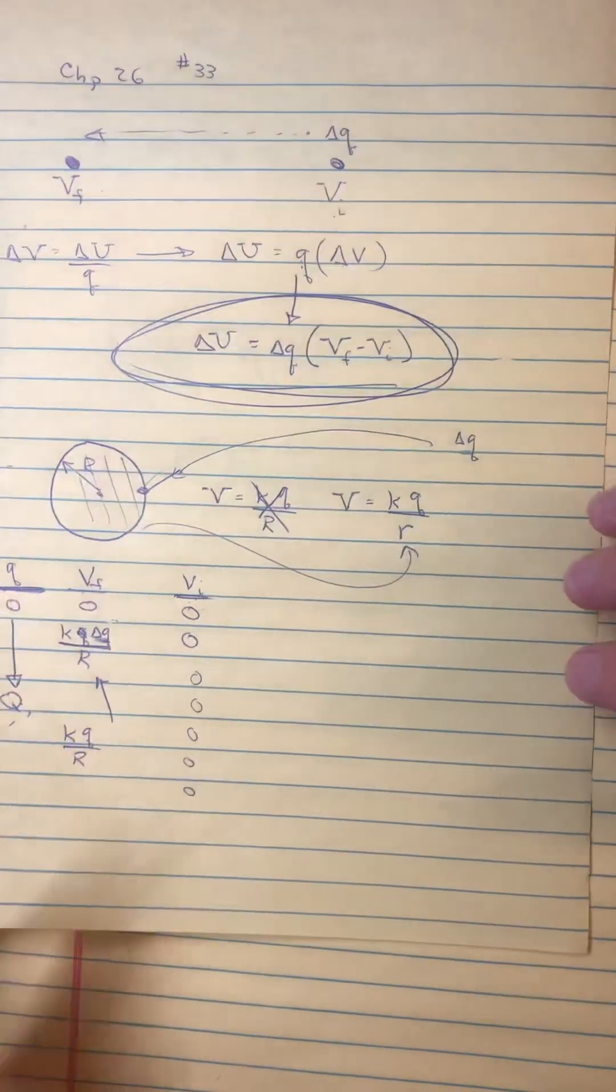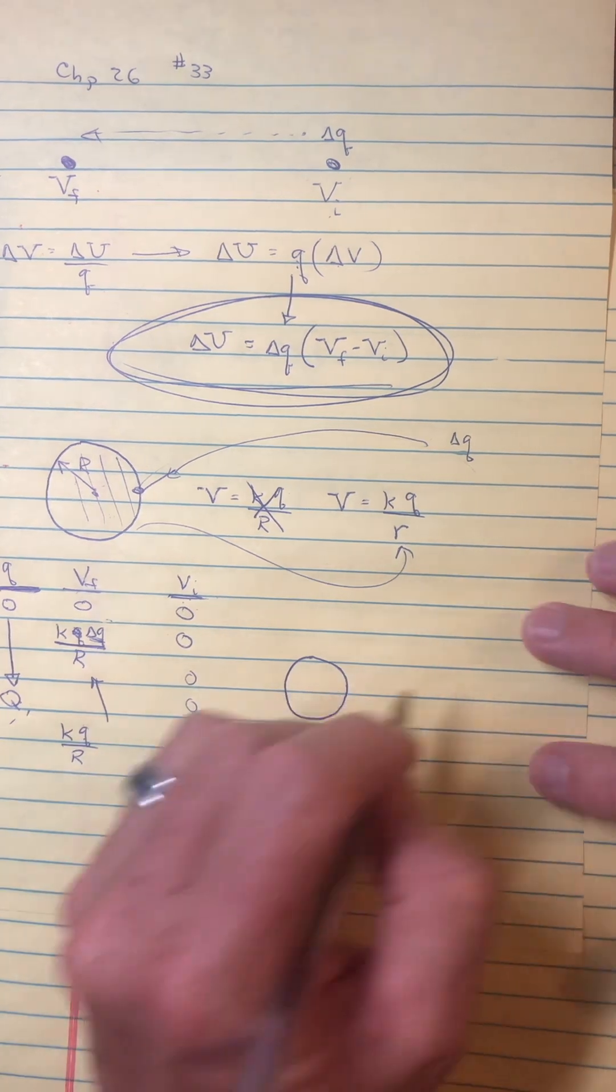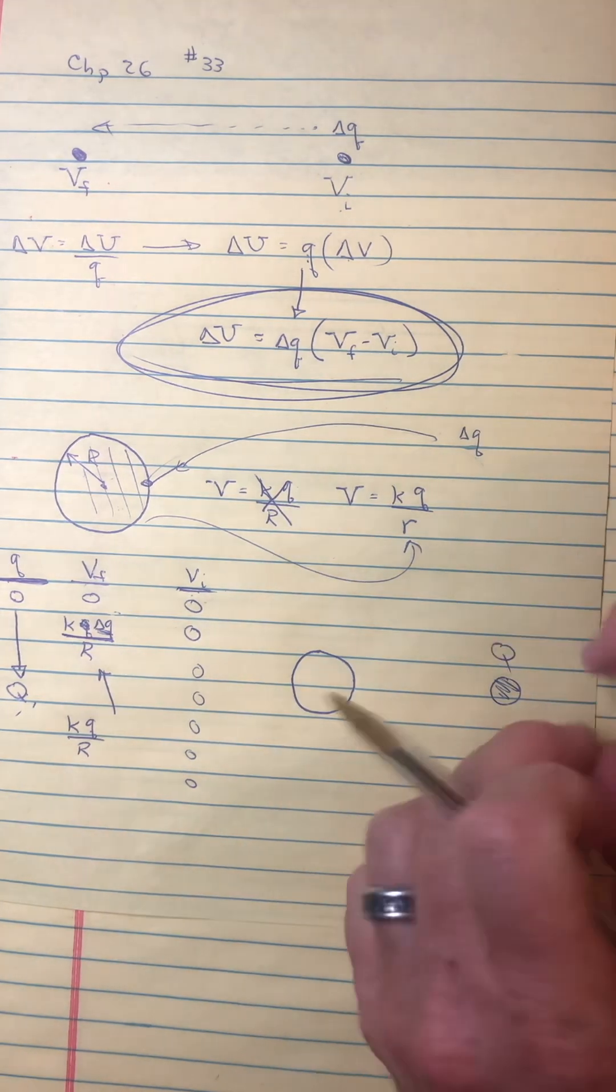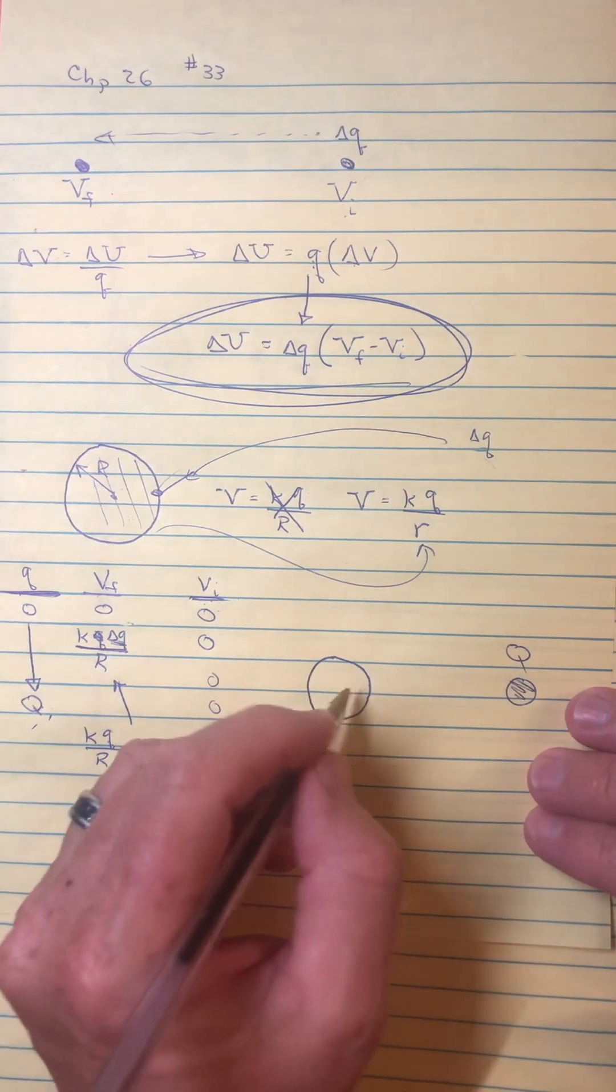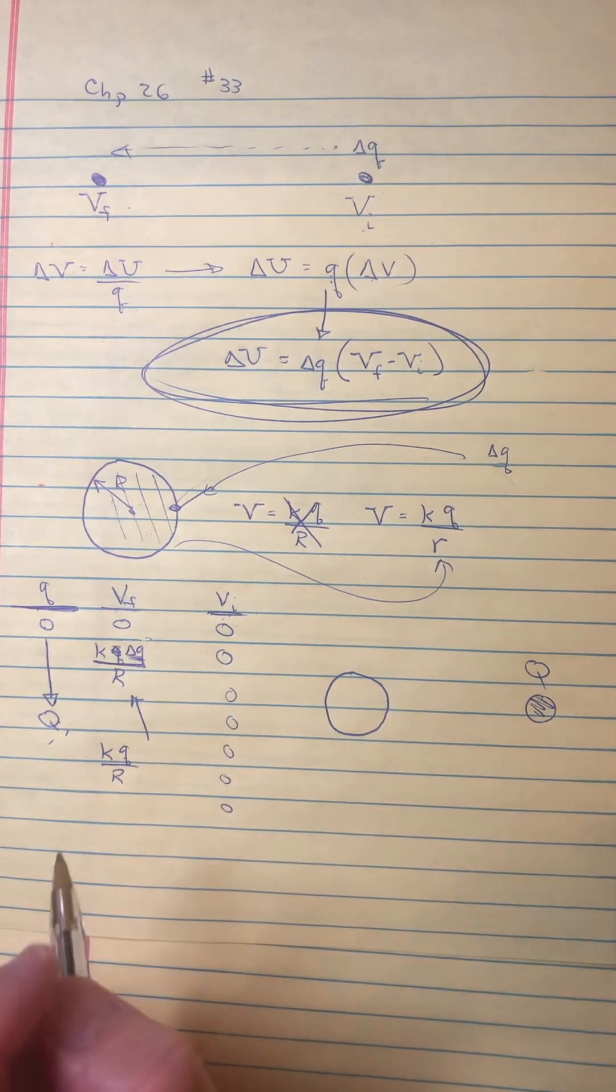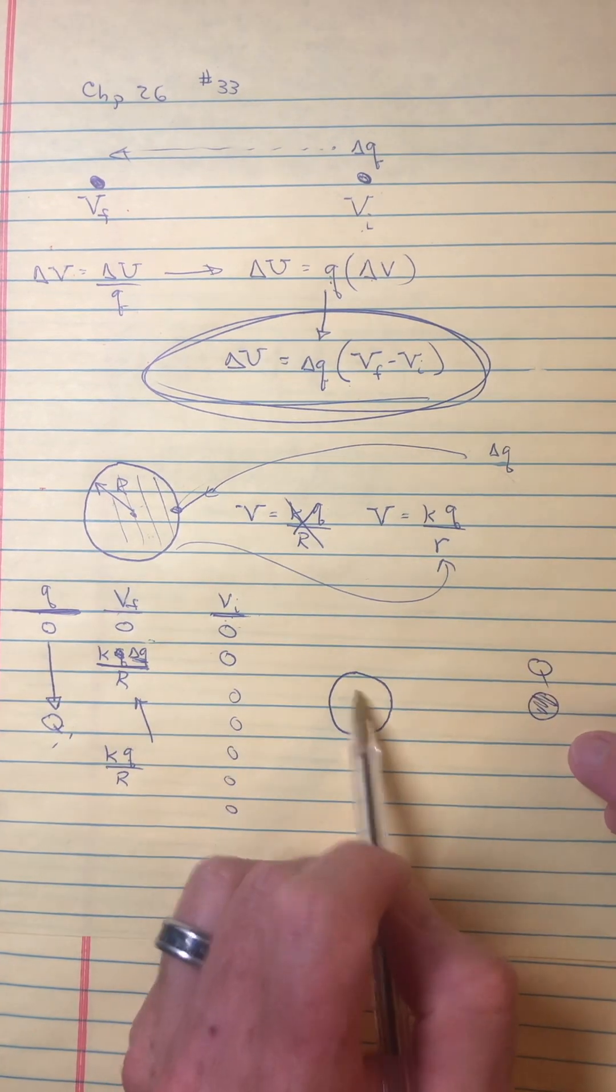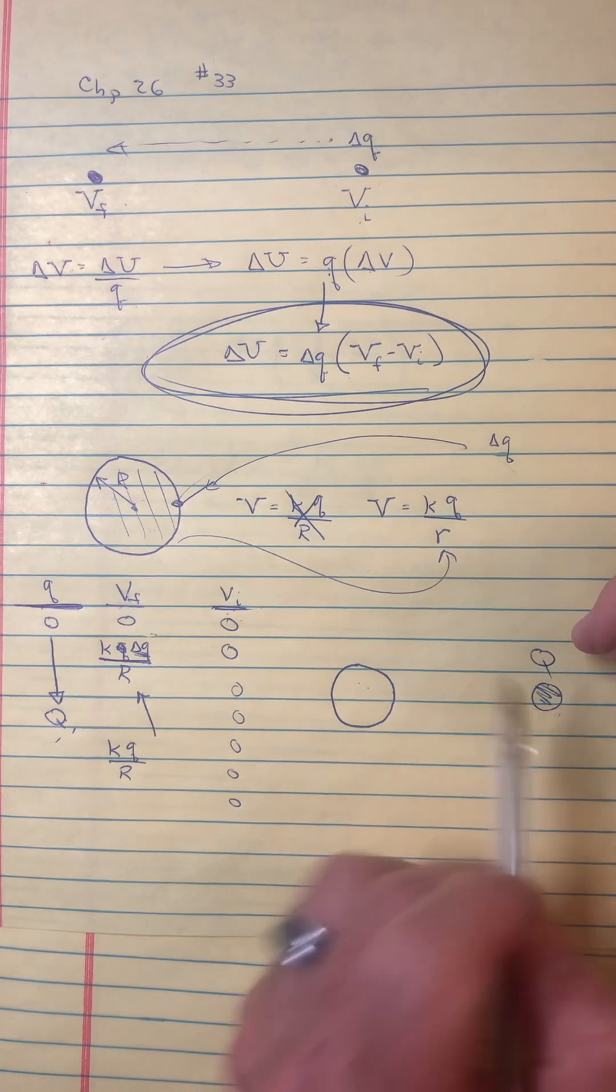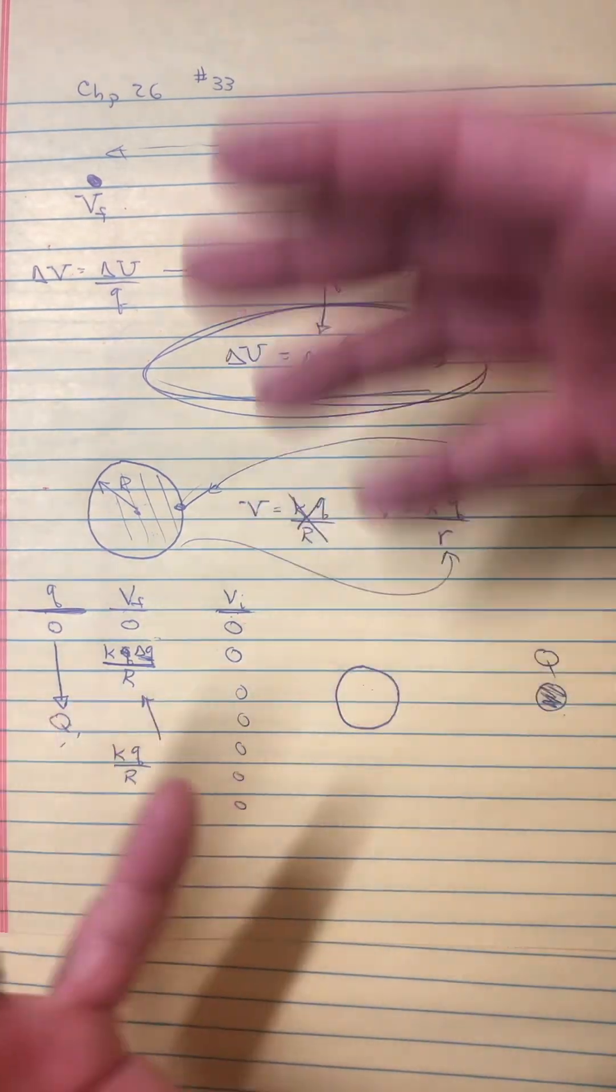I think you can get careless here and do something like this. You could say okay, what if I imagine coming way over here from infinity and I grab a charge of Q, I just grab it all at one time, and then I bring it over. Well if you bring it over and there's no charge here, then it takes no energy.